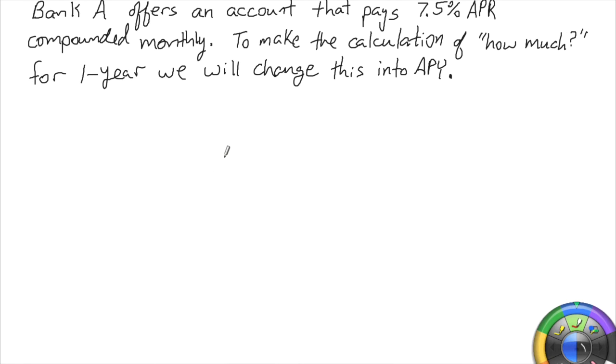This is an example about APY. Bank A offers an account that pays 7.5% APR (annual percentage rate), compounded monthly. This tells us that n equals 12. To make the calculation of how much for one year, we're going to change this into APY, which is annual percentage yield.